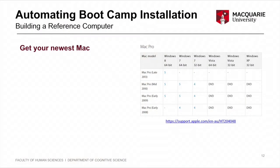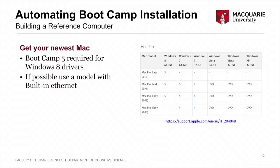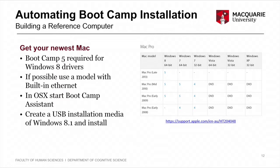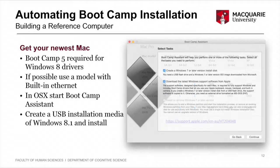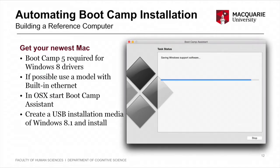So what did we do to automate this process? First, build your reference computer — the one you're going to copy to everything else. As long as you can find it on Apple's website and it supports Boot Camp 5, which is the Windows 8.1 drivers, get the newest Mac you've got and install Windows on it. If you can, build your reference computer on a model that has built-in Ethernet, because Windows 8 already has a generic driver for that pre-installed, which is useful. Go ahead, insert your USB stick, build an installer, and run through the Boot Camp assistant steps.